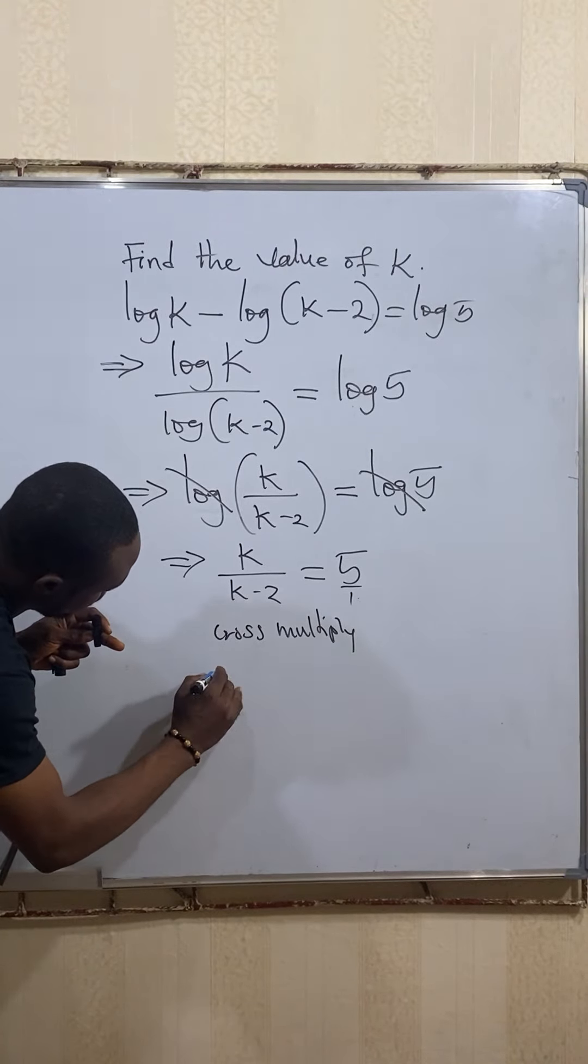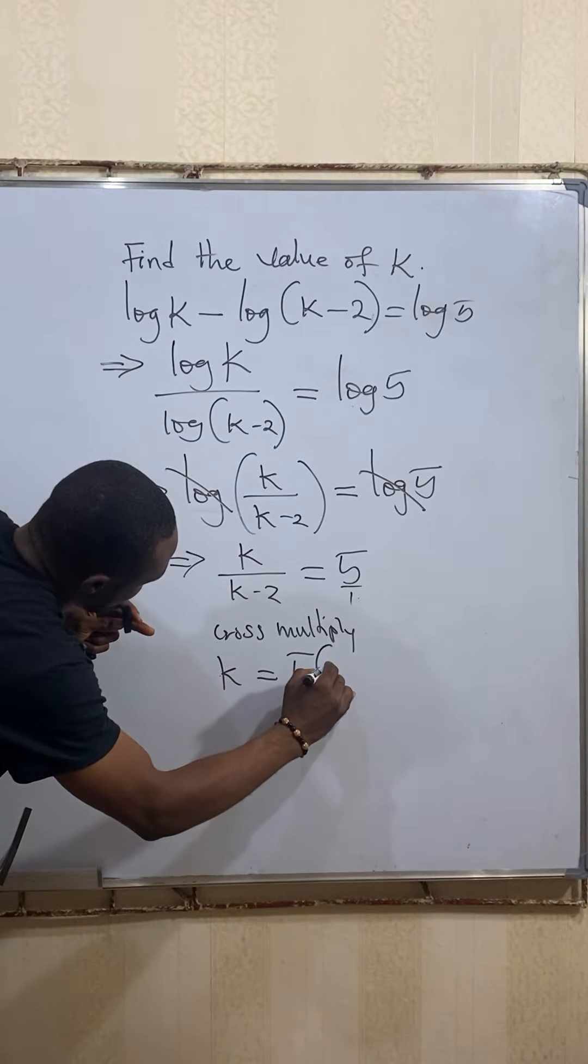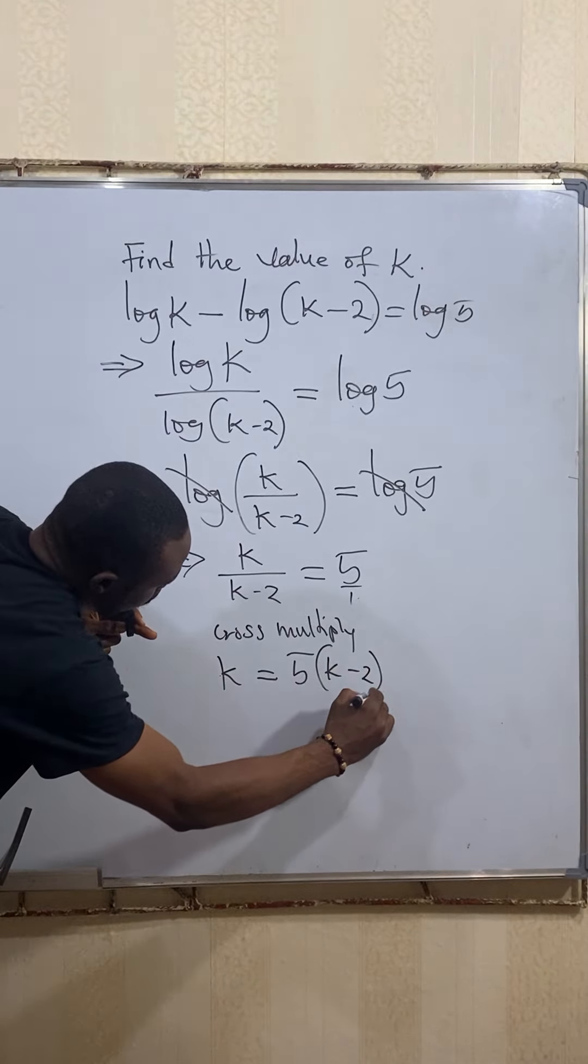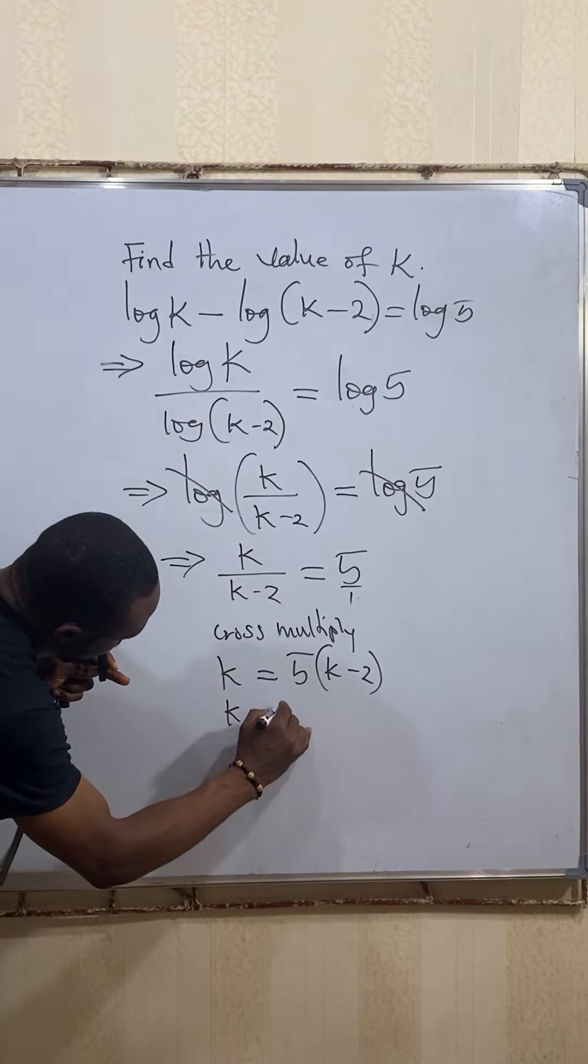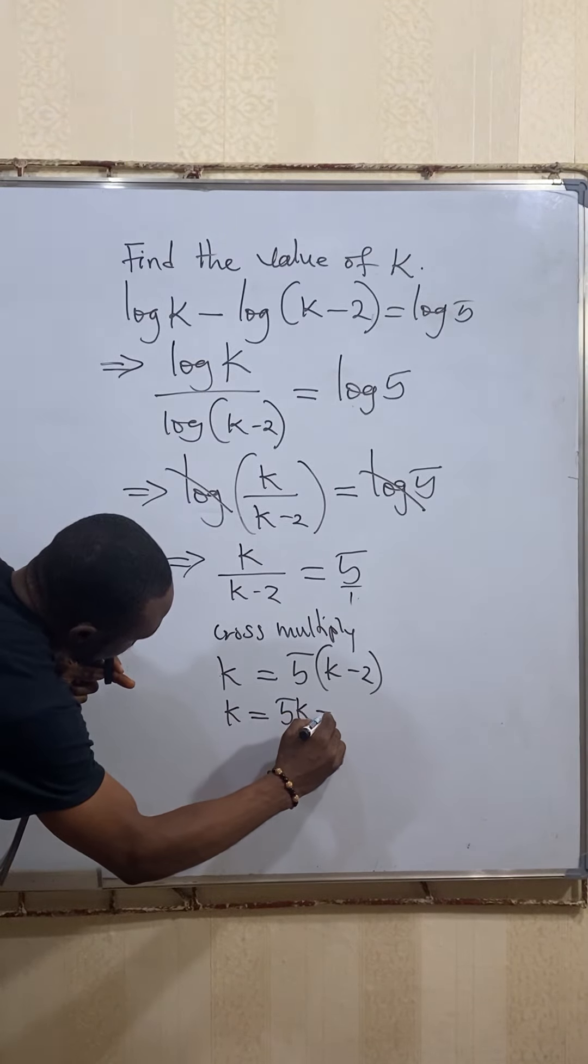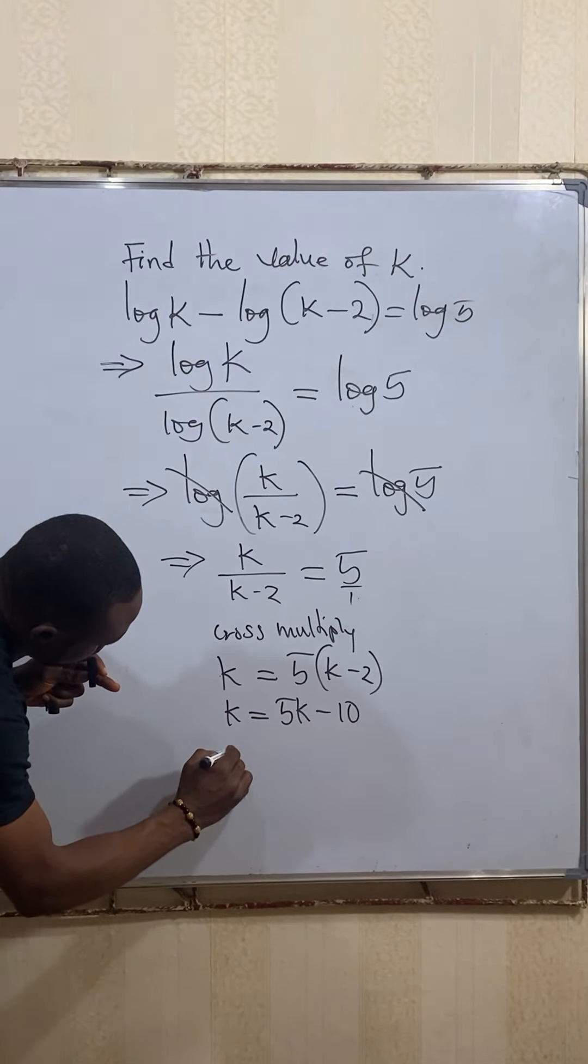If you open the bracket, you have k equals 5k minus 10. So if 5k crosses, equal to 10, you have k minus 5k to be equal to minus 10.